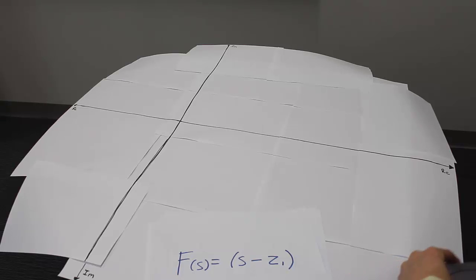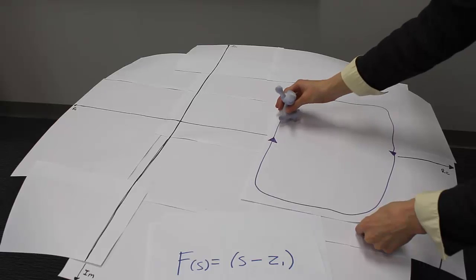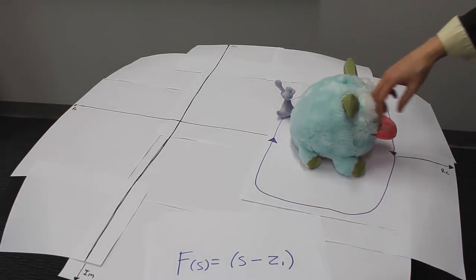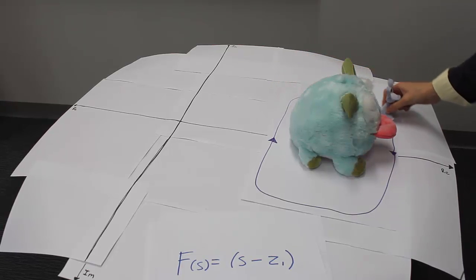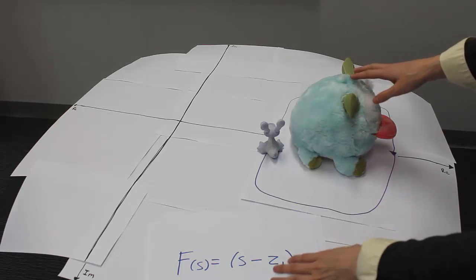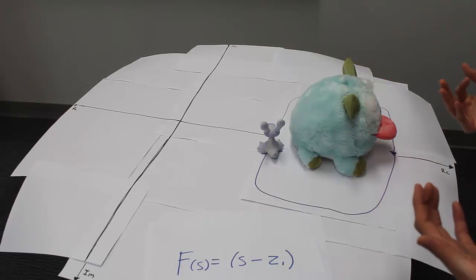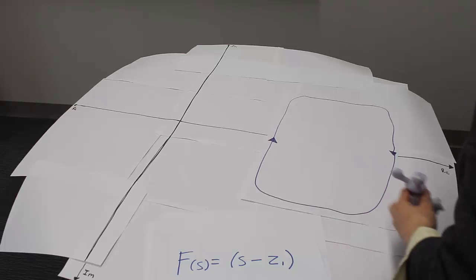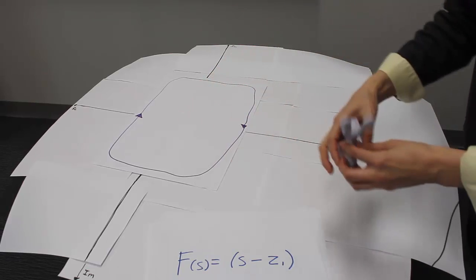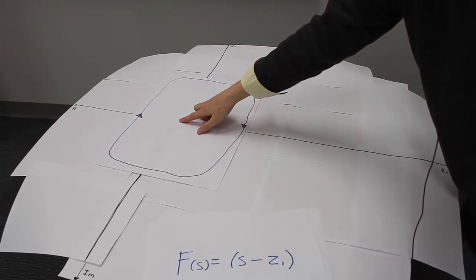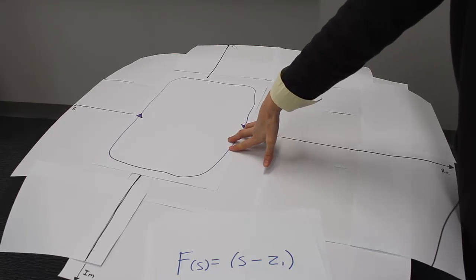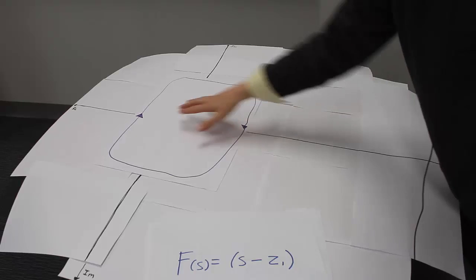Still working with the same function, but now the input contour is larger, and the important part is that Poro is inside the contour. From his perspective, it looks like Valerie is walking around him completely in a big circle. If we put this through our Poro zero function, the output is again shifted — this time shifted to the origin. So if Poro is inside the contour, the output will move to encircle the origin. The direction is preserved: if the input goes counterclockwise, the output also goes counterclockwise.